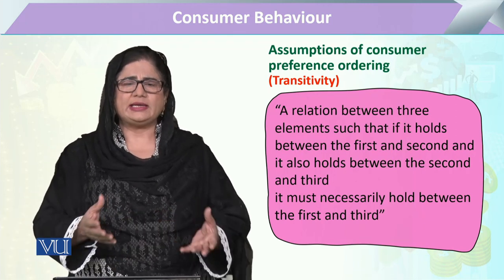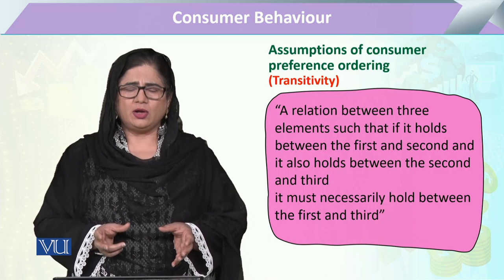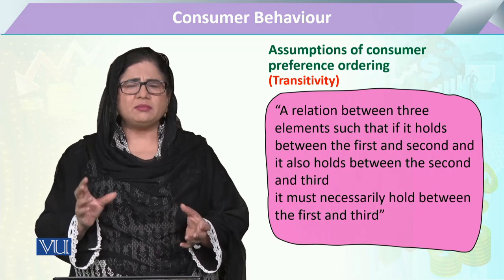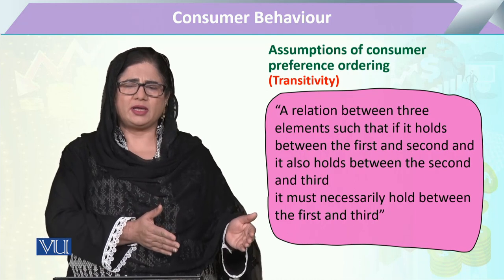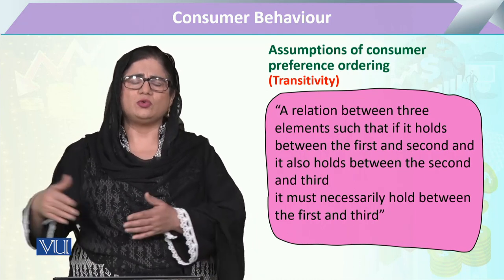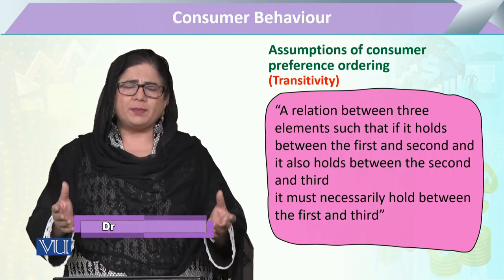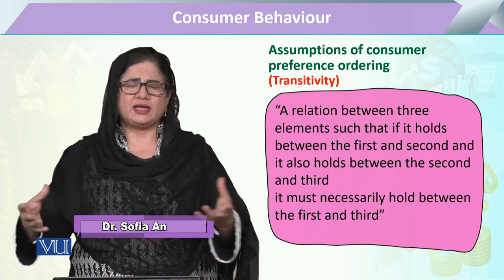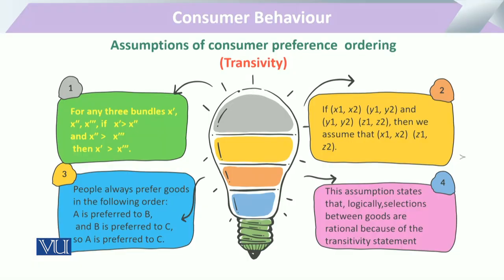We had established that whenever a consumer compares consumption bundles, the comparison is always between two bundles. In transitivity, we are referring to three bundles — but these three bundles are not compared simultaneously. Rather, two bundles are compared at one time, and then one of those is compared with the third. So the essence of this assumption is: comparison of two bundles at a time, and then again two bundles at the next step.